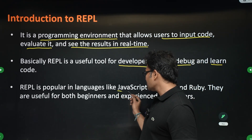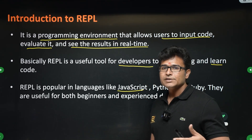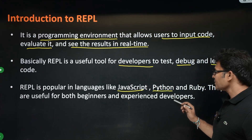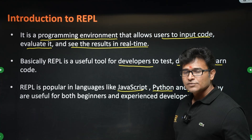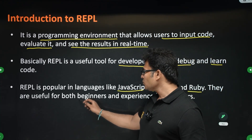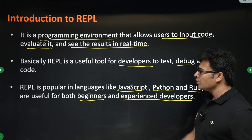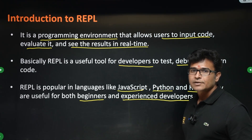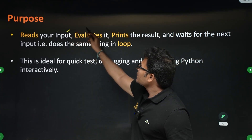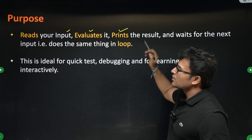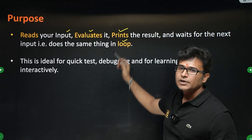REPL is present in many languages — for example, JavaScript also has REPL, and Ruby also has REPL. This is useful for beginners and also experienced developers for debugging. Beginners can learn coding interactively; experienced developers can debug code. REPL reads the input, evaluates it, and prints the output, then repeats.